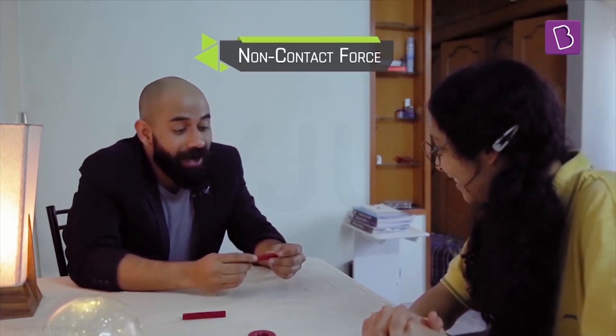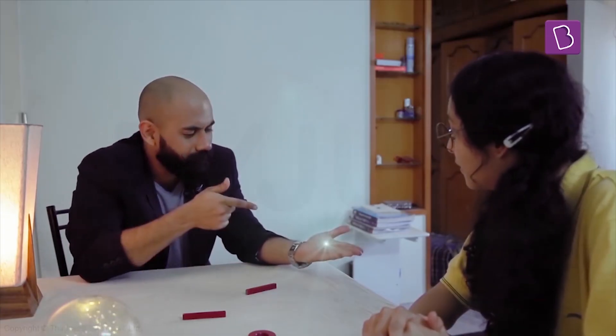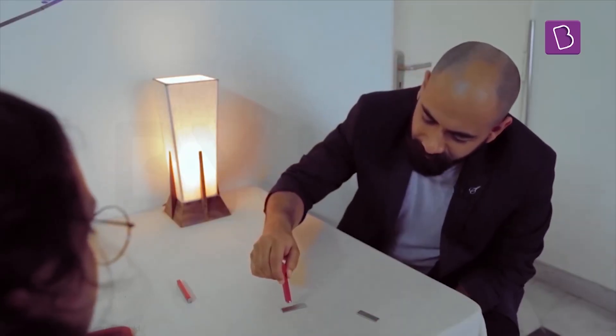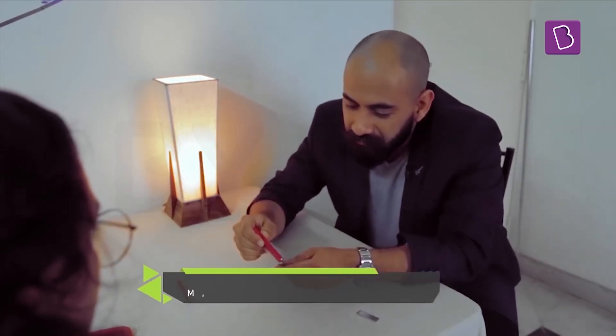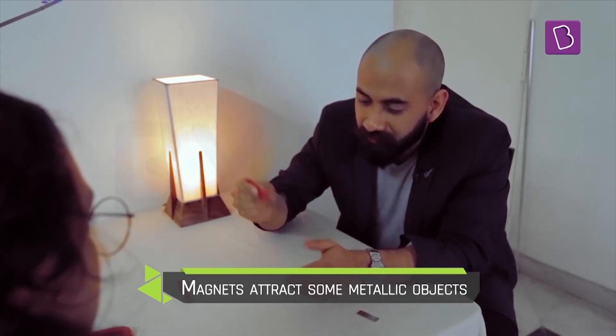Exactly. Now magnets are also fun when you play with metallic objects. So magnets always attract certain metallic objects like these. Now see this. Yeah. Both poles of the magnet attract this object.